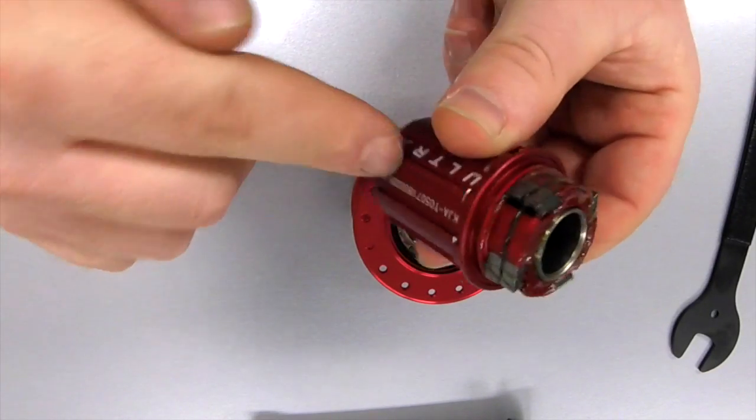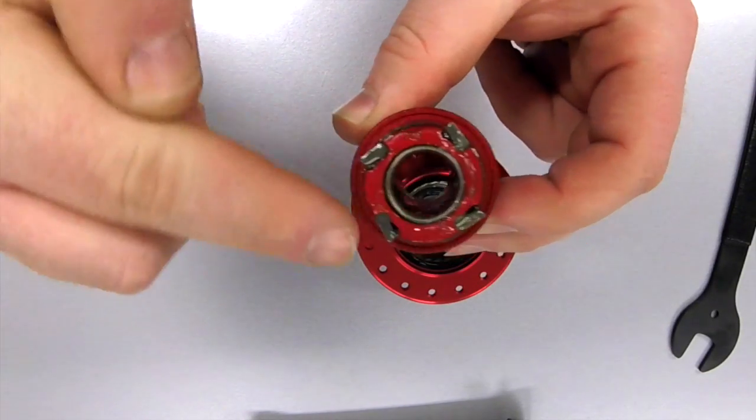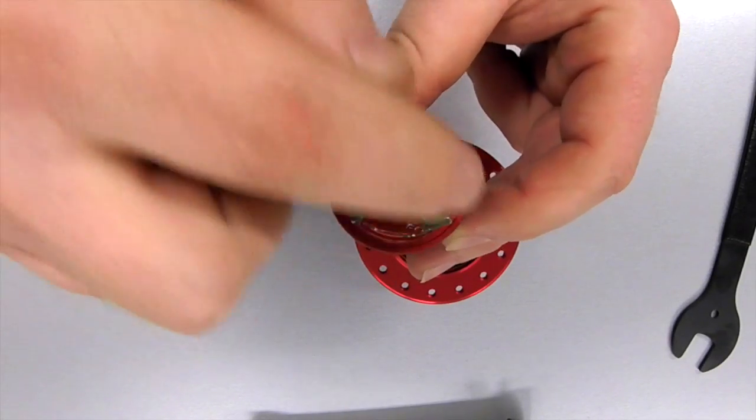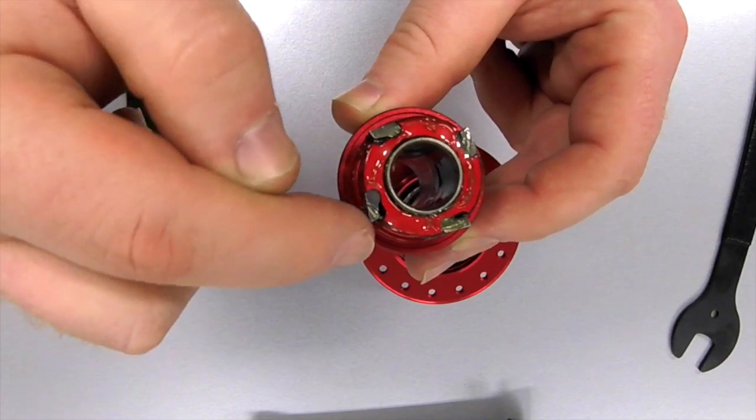If you have a look, the Ultra version of the freehub has four poles. The Evo version which is blue comes with three poles. You can upgrade to the new Ultra version at any time.